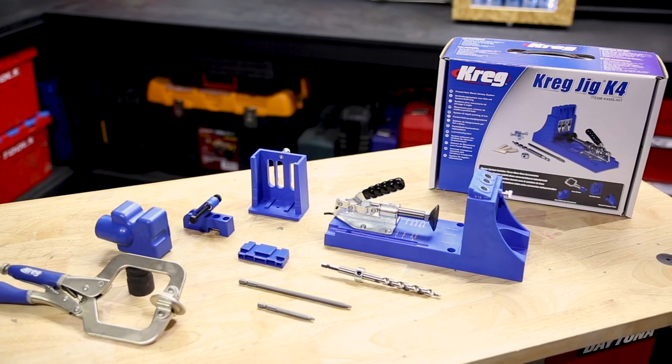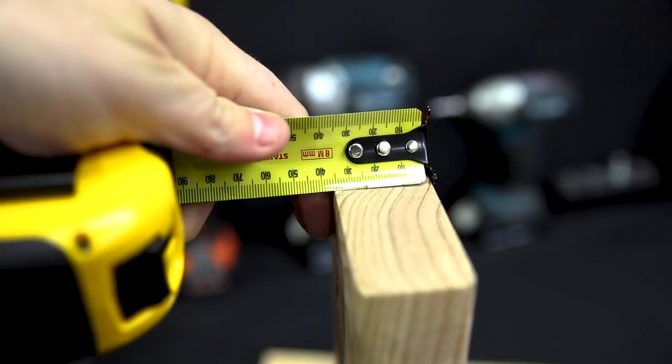This is a pocket hole jig system. It drills a shallow angled hole to semi-conceal a screw for fast, strong joints in timber. To use, measure the thickness of your timber and set that thickness on the drill guide using the scale on the side.